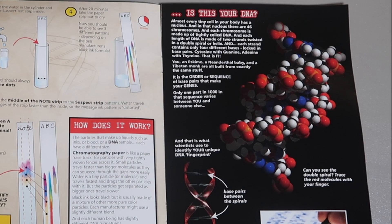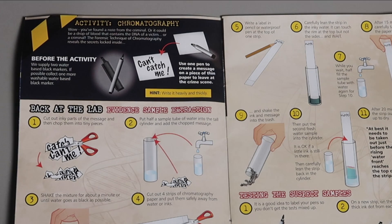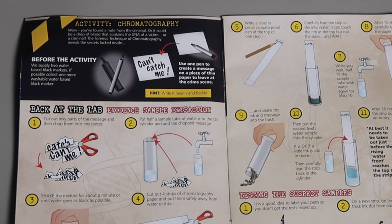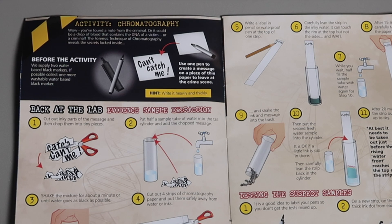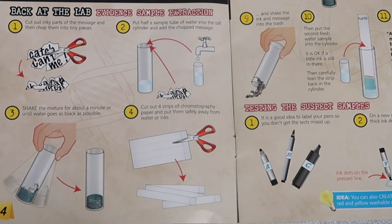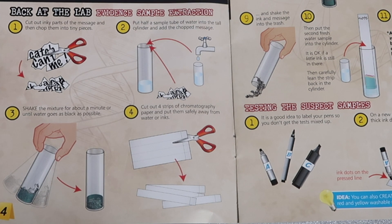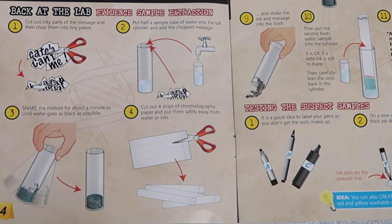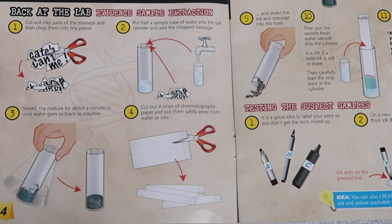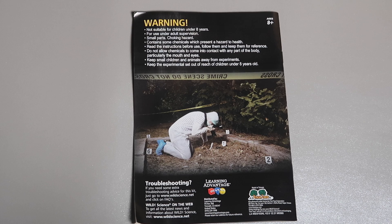The second part of the activity is for the parent to secretly set up the crime scene, such as planting DNA evidence on clothes or leaving fingerprints or a secret invisible message. And then the main section of the activity is for the child to use the techniques provided in this forensic kit to solve the mystery and the crime. It's very well designed.